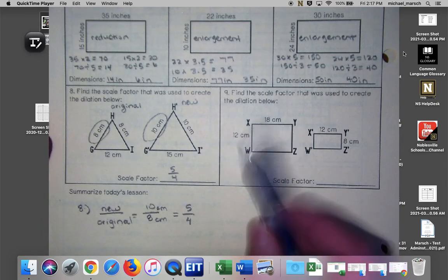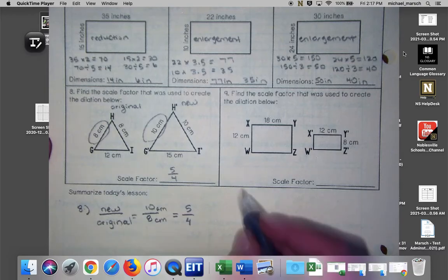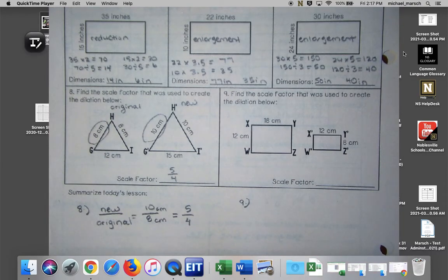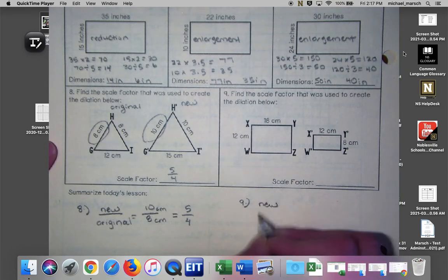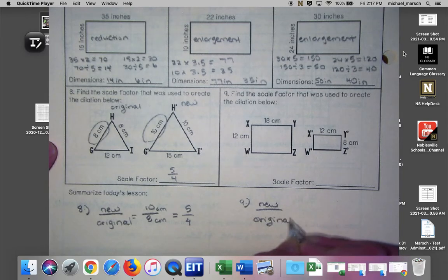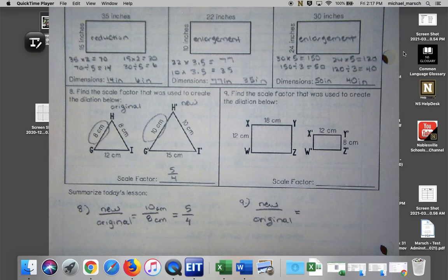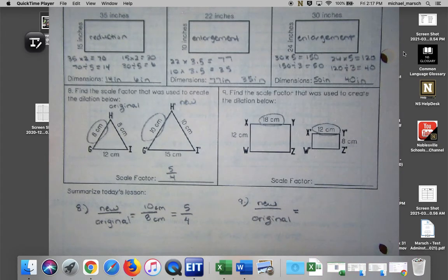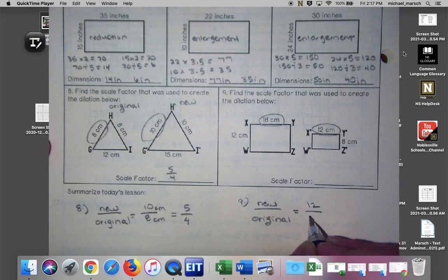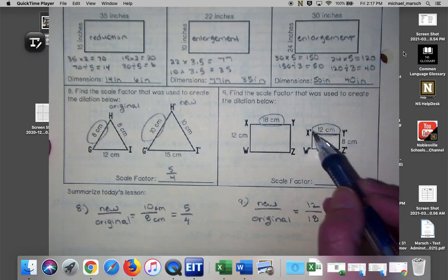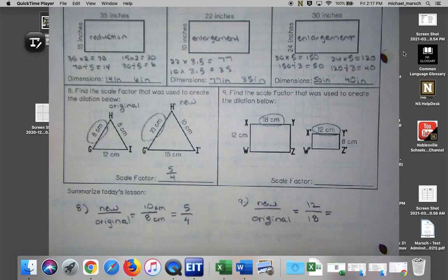Okay here we go, we have two rectangles. I only have one option to use because I only know for sure that two of those line segments are in the same position. So I've got my new divided by my original. So which line segment am I going to use? 18 and 12. Good job. So my new is 12 and my original is 18. You got to pay attention to those apostrophes. What does 12 over 18 simplify to? Six over nine. Yep and then that can simplify again.